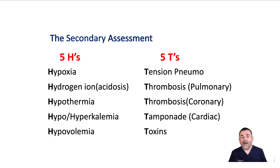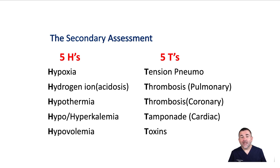The H's and T's provide us a possible diagnosis and interventions for our patient. Hypoxia occurs when inadequate oxygen reaches the body's tissues. Hydrogen ion, or acidosis, is the accumulation of acid and hydrogen ions in the blood and body tissues. Hypothermia is when the body temperature drops below 35 degrees Celsius. Hypokalemia is low blood potassium. Hyperkalemia is an abnormally high concentration of potassium ions. Hypovolemia is low blood volume.